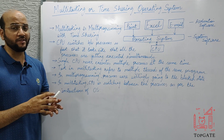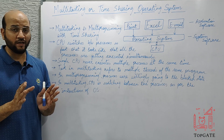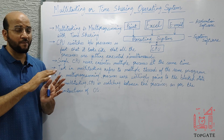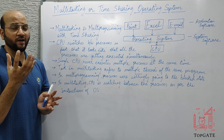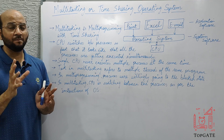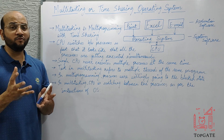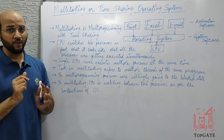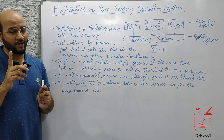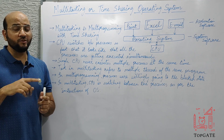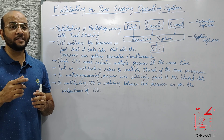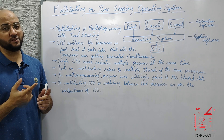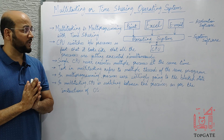Since the process has to wait for I/O, the operating system says it cannot keep the CPU idle, so it is better that the process goes to the block state or waiting state. That process leaves the CPU and goes to the block state to complete the I/O event. Meanwhile, another process from the ready queue is sent to the CPU for execution, and when the waiting process completes its I/O event, it goes back to the ready state to wait for its turn.